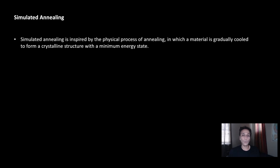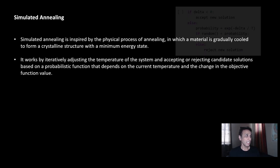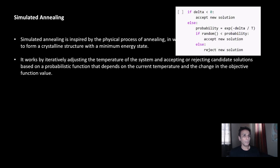Moving on to simulated annealing. Those of you from material sciences or a metallurgical background know what annealing is — it's basically a slow cooling of a metal or an alloy. You get a nice crystalline structure with a minimum energy state. The slower the cooling rate, the larger the grains. So annealing refers to slow cooling to get the desired properties in the material.